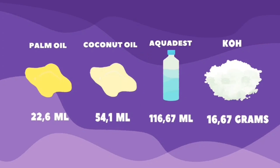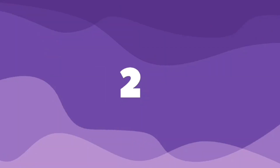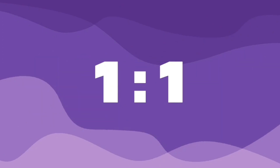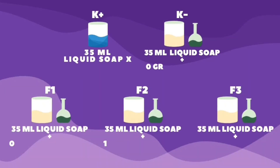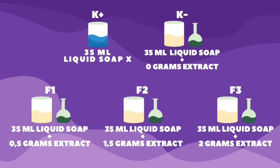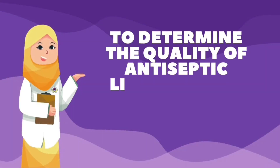The procedure for making antiseptic liquid soap goes through 3 stages: starting with mixing all the basic ingredients for making liquid soap until you get a soap paste, and letting it sit for a few hours. Next, mix the base soap and aquades in a ratio of 1 to 1 and stir until liquid soap is obtained. Then, mix the liquid soap with 0 grams of extract as negative control, and 0.5 grams, 1.5 grams, and 2 grams as Formulation 1, Formulation 2, and Formulation 3, and prepare a branded commercial soap as positive control.